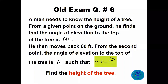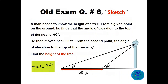Question number six: a man needs to know the height of a tree. From a given point on the ground, the angle of elevation to the top of the tree is 60 degrees. He then moves back 60 feet, and from that second point the angle of elevation to the top of the tree is theta, where tan theta equals square root of 27 divided by 7. Find the height of the tree.